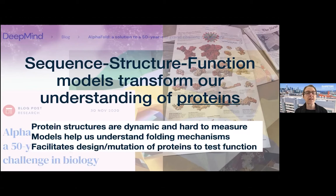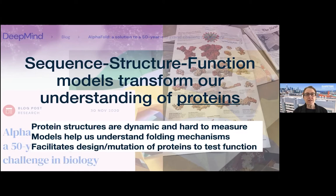The reason that having models linking sequence to structure and structure to function has been so important for decoding proteins is that protein structures are dynamic and hard to measure—not easily done in high throughput. Models also help us understand the mechanisms of folding. Even if predictions aren't strictly necessary, a model teaches us which features matter for folding and facilitates the design of experiments—for example, mutations to test the importance of different residues in protein function.